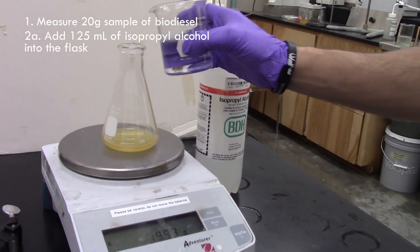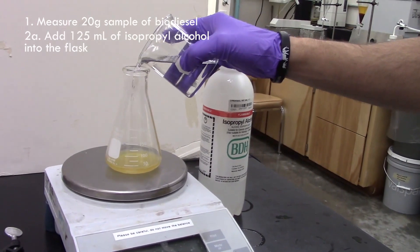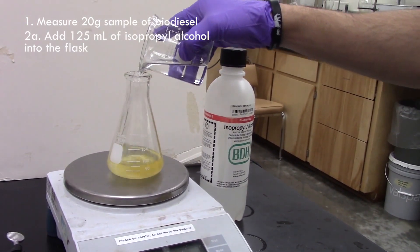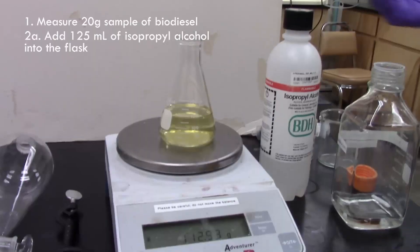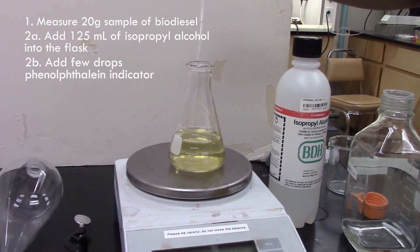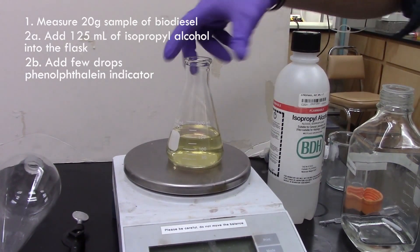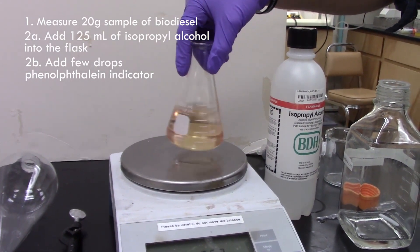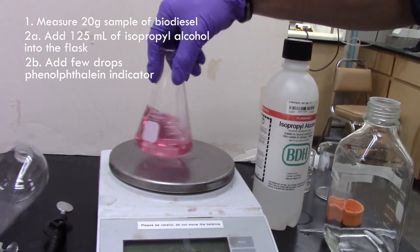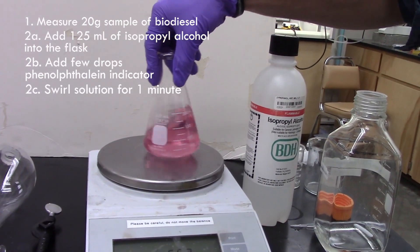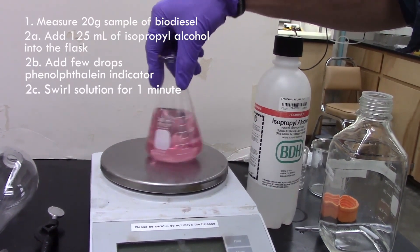Add 125 mL of isopropyl alcohol into the flask containing the biodiesel sample. Add a couple of drops of phenolphthalein indicator solution into the biodiesel solution. The solution should turn pink, which indicates that the solution is basic. Swirl the solution for approximately one minute to ensure the uniformity of the solution.